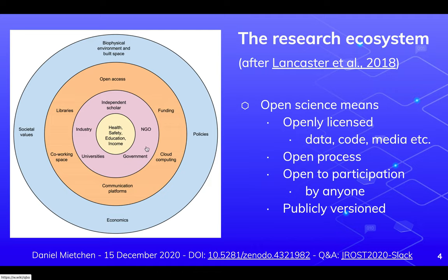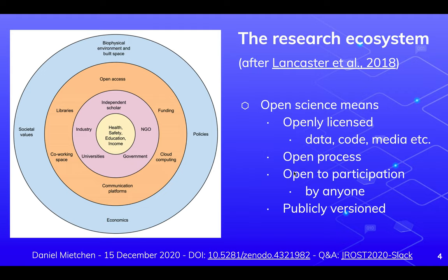This doesn't say anything about openness, but basically it means that information can easily travel within this space. Open science would mean that whatever is produced in terms of data, code, and media is open and licensed. There is an open process for the research projects; the projects are open to participation by essentially anyone; and there is some version control going on that is logged in public.